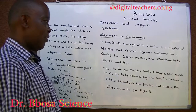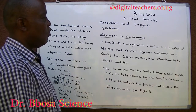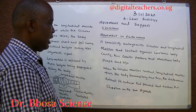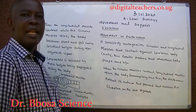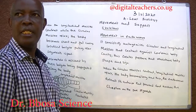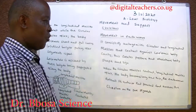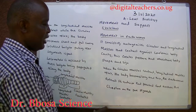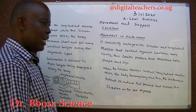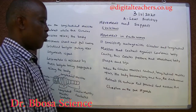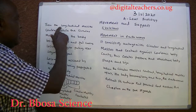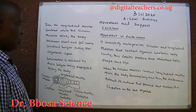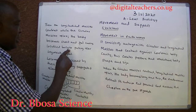Movement in earthworm: The earthworm consists of antagonistic circular and longitudinal muscles that contract against the coelomic body cavity. This creates pressure that maintains body shape and size. When the circular muscles contract, longitudinal muscles relax. The body becomes long and thin.